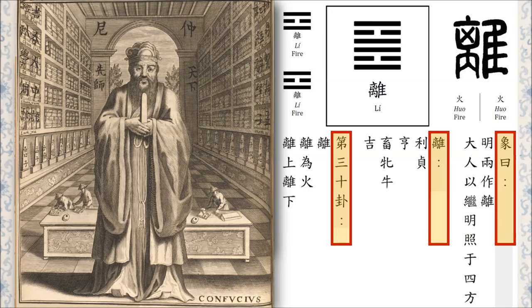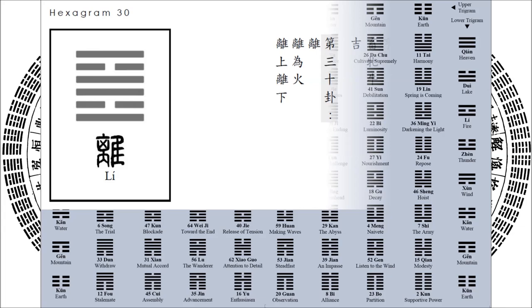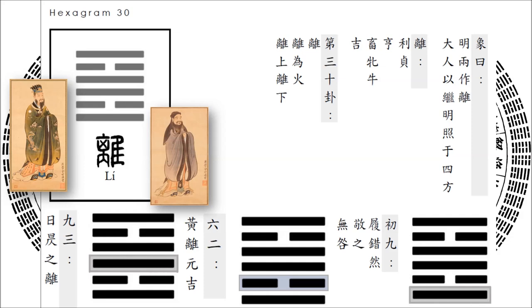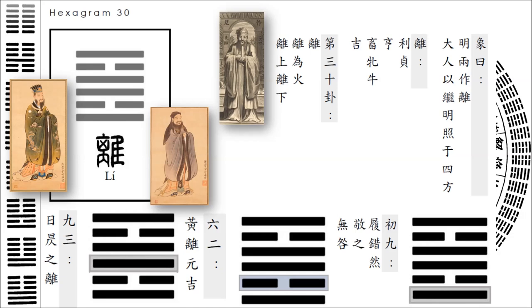Did Confucius actually write the Ten Wings? Or maybe several scholars over several centuries wrote them and just credited their writings to Confucius? You'll have to ask a historian — that's not me. We now have the sixty-four names of the sixty-four hexagrams as received by King Wen, and text assigned to each of the three hundred and eighty-four lines as received by the Duke of Zhou. Confucius, or Confucian scholars over these centuries, then writes the Ten Wings, which has become the basis for how we articulate and interpret these six-line diagrams.